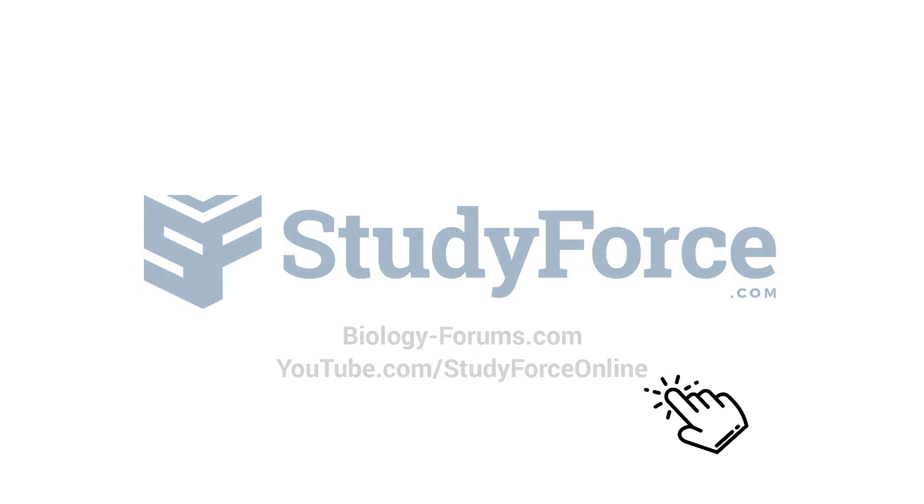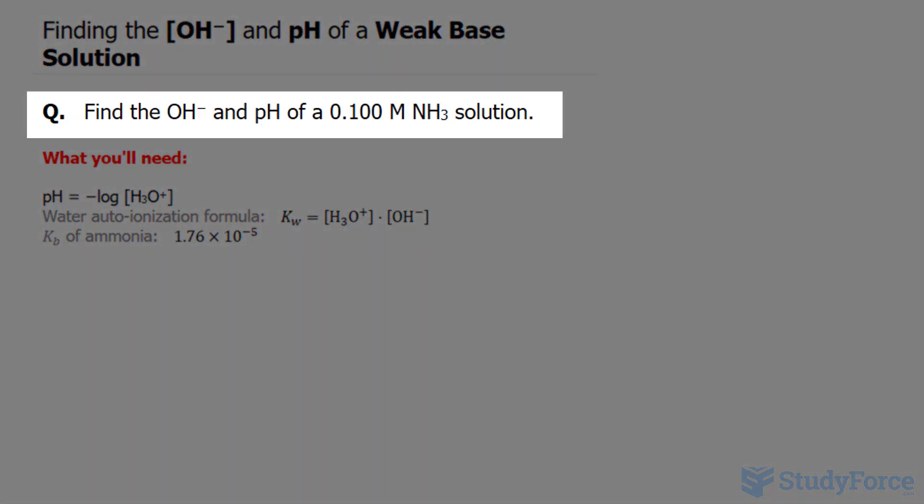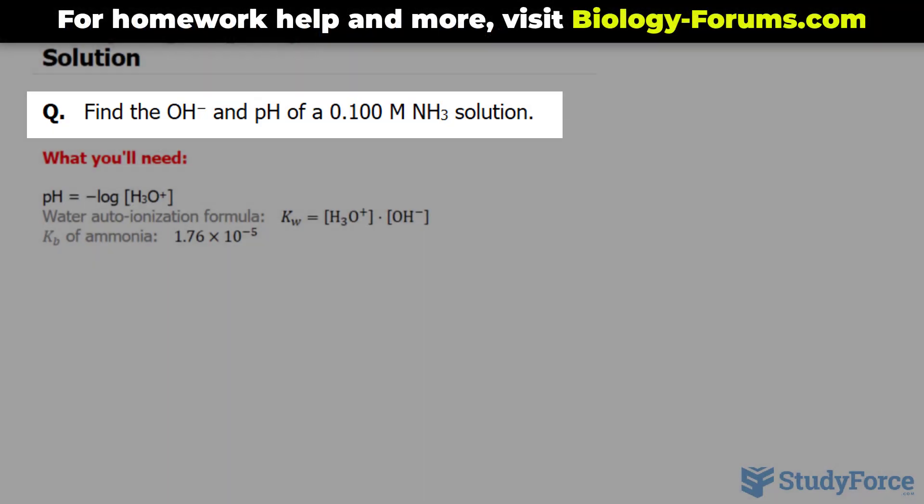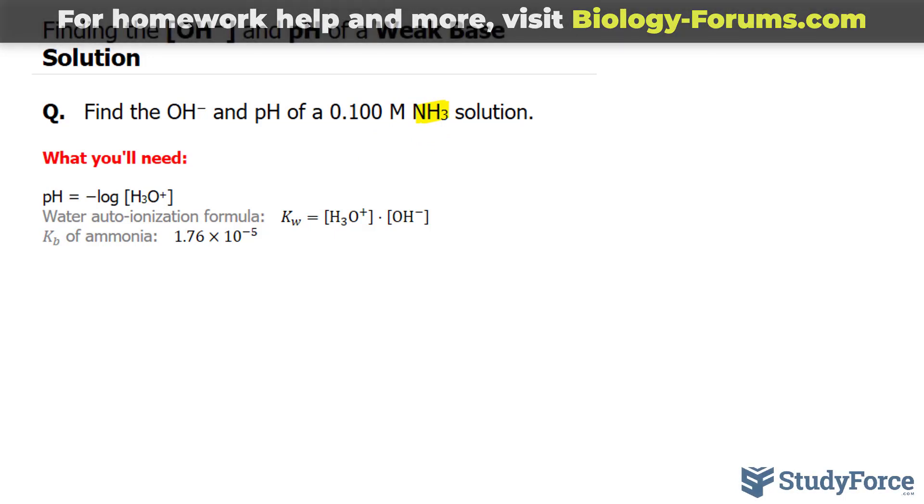In this lesson, I'll show you how to find the hydroxide concentration and pH of a weak base solution. The question states: find the OH minus and pH of a 0.100 molar NH3 solution. Our molecule here, that's the base, is NH3, and it is a weak base, so it does not completely dissociate.